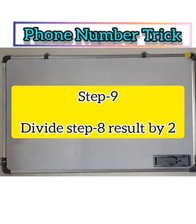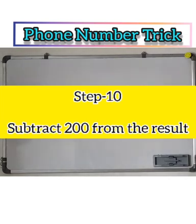Step 9: Divide the final result of your friend with 2. Step 10: Subtract 200 from the result.